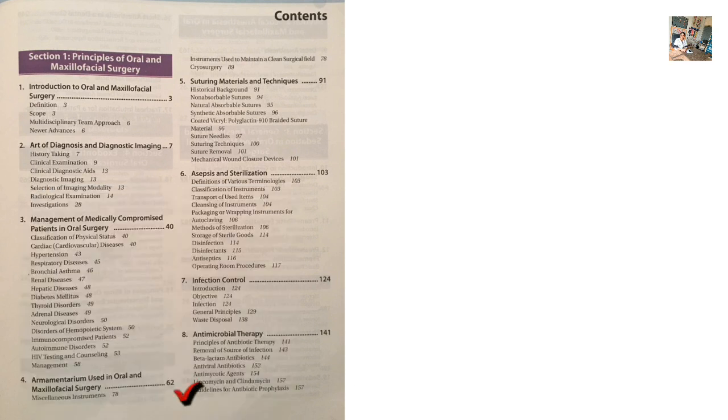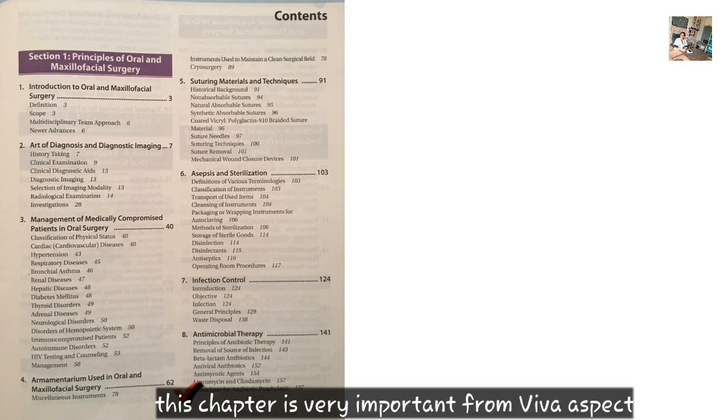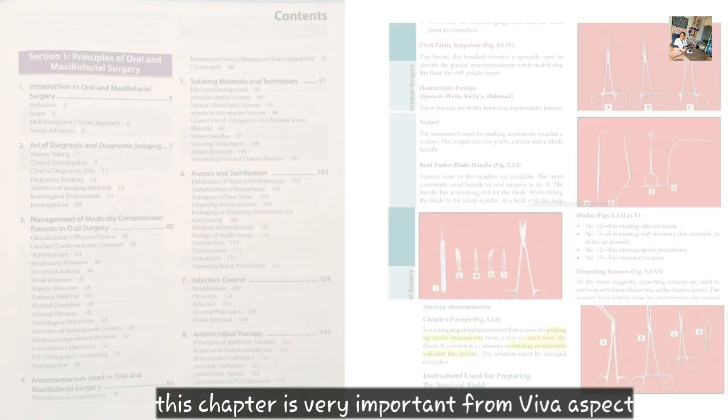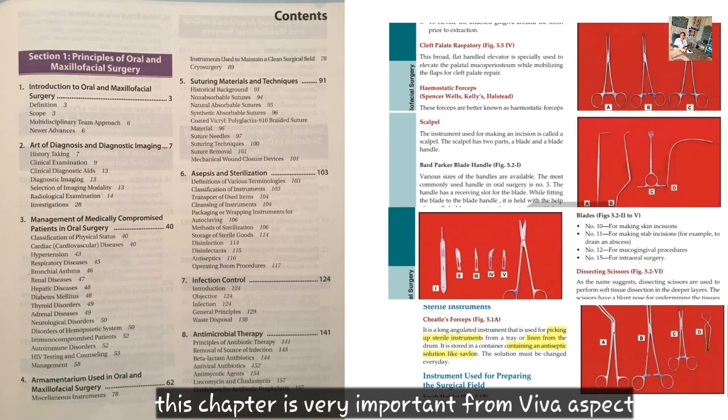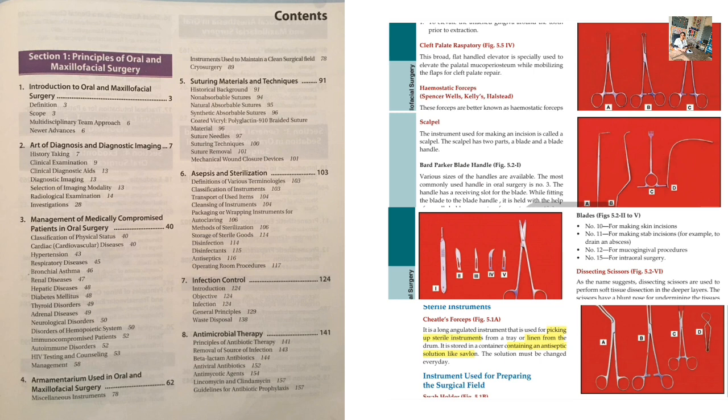Chapter 4: Instrumentation used in oral and maxillofacial surgery. From a table viva point of view, you need to know the most important information about each instrument.